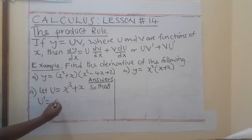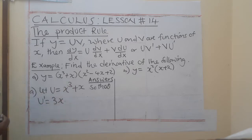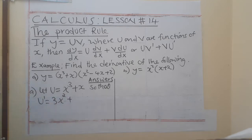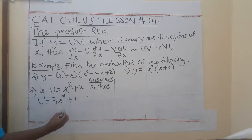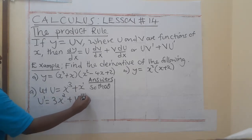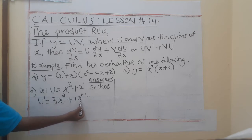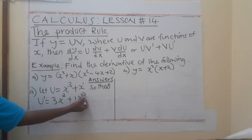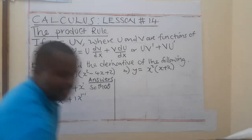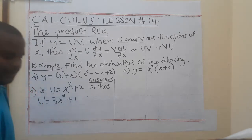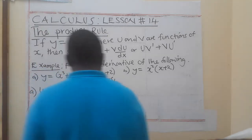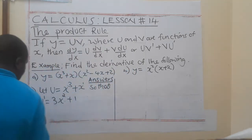What is my coefficient? It's 1. So 3 times 1 is 3. The power is 3, so 3 minus 1 gives 2. Plus, for the x term, the coefficient is 1: 1 times 1 is 1, and the power is 1 minus 1 = 0, so x⁰ = 1, giving us 1. So u-prime = 3x² + 1.